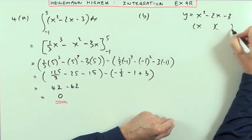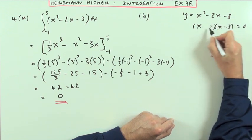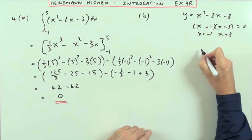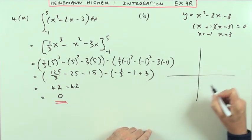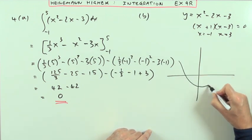So I'll factorize that equal to 0. It must be this way round with a negative there and a plus there. That means it's cutting at negative 1 and at 3. So if I was to draw a graph of this, it cuts at negative 1, comes back up at 3, going to come down like this.